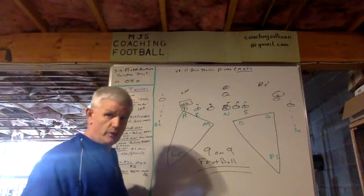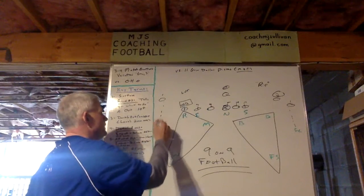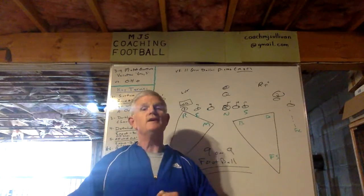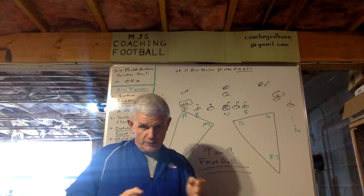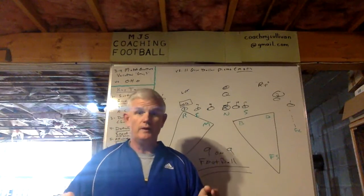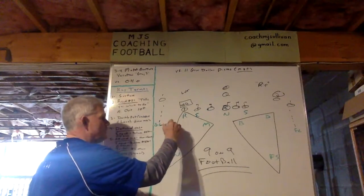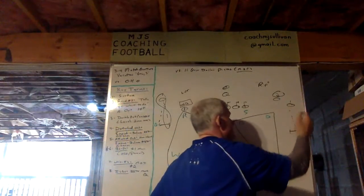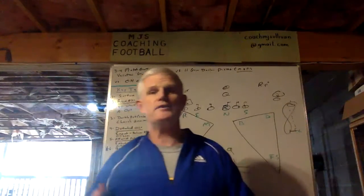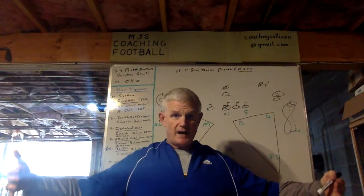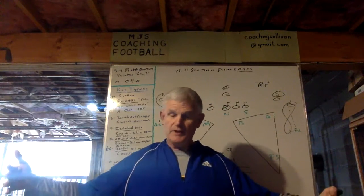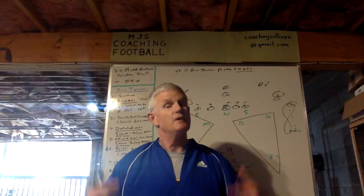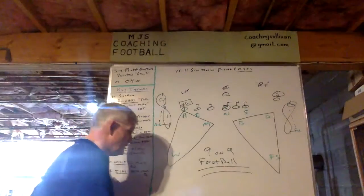Let's start with the corners. Their alignment is out of sky — outside hip, slightly turned in, back foot back so they can walk-pedal. They're reading the surface. On the snap, they're stemming inside and executing any and all man principles. If playing off man, they execute off man principles. If in press, they start outside press, then stem inside. As the receivers look in, corners are taught on the QB indicator snap — stem, then play pure man principles from press.